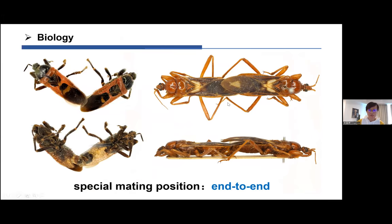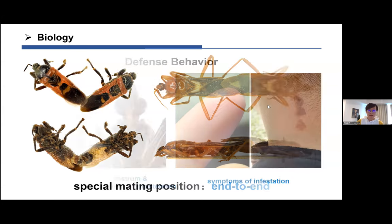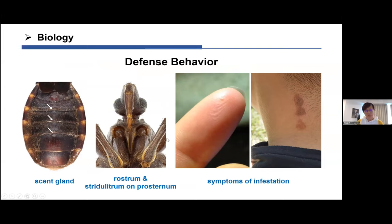This subfamily also has a very special end-to-end mating position, and in some species the male and female can even form a straight line, similar to some other Heteropteran families. As bugs, they have scent gland systems — when endangered they release a really bad smell. Some species can also make a hissing noise using the rostrum and the stridulitrum on the prosternum. Species of Peiratinae are also famous for an extremely painful bite, and some people's skin may be allergic to their saliva.